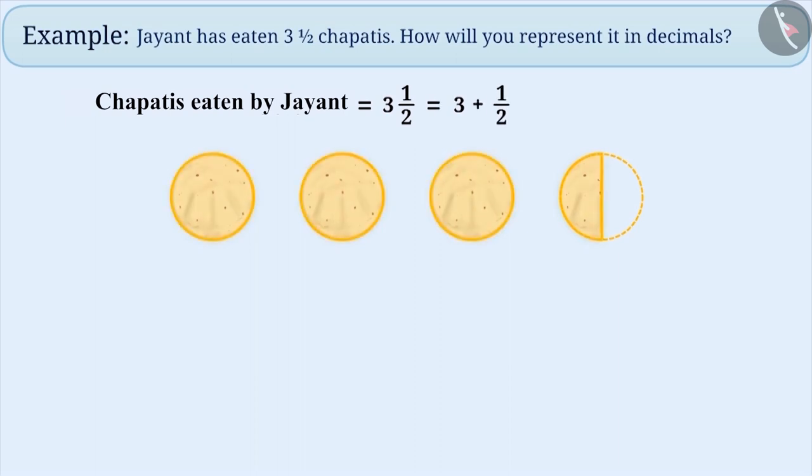Here, 3 is a whole part and 1 is a half part of the whole. Here, we need to convert half into a fraction where the denominator must be a number like 10, 100, 1000, etc.